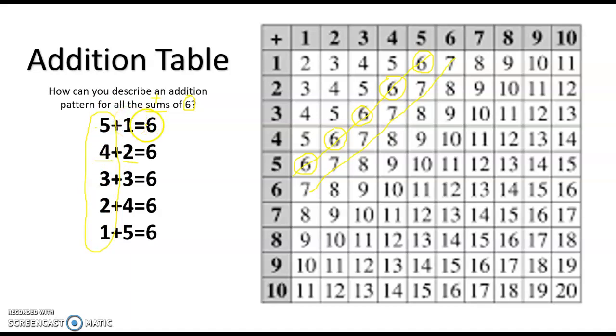So 5 plus 1 is 6. If I take 1 away and make it 4, I've got to give 1 to the second addend. So I make the 1 a 2. So my first addend goes down by 1. My second addend goes up by 1.